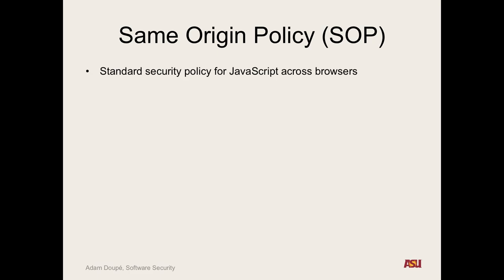The same origin policy defines how JavaScript talks to other JavaScript when we're executing all this JavaScript code concurrently. JavaScript can change the HTML and look of a page — so why doesn't JavaScript from one site change the HTML in another tab? Can frames change each other's content? JavaScript can access cookies — can JavaScript from `malicious.com` access a cookie from Chase? We'd want the answer to be no, but how does the browser decide? This is what the same origin policy addresses.